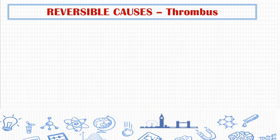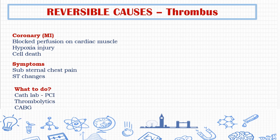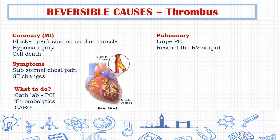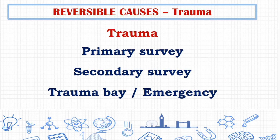The next reversible cause is thrombus, which can be either coronary or pulmonary. If coronary, it blocks cardiac vessels causing low perfusion to the cardiac muscle, leading to hypoxia and cell death. Symptoms are substernal chest pain and ST changes; immediate percutaneous coronary intervention, thrombolytics, or coronary artery bypass graft must be done. If pulmonary, it restricts blood flow to the right ventricle, causing shortness of breath, hypoxia, and tachycardia; management includes embolectomy, fibrinolytics, and ECMO.